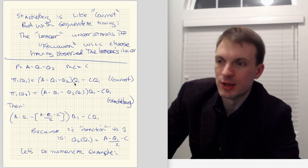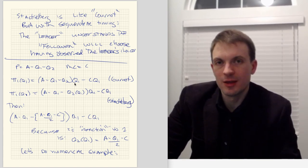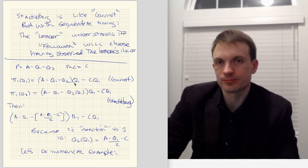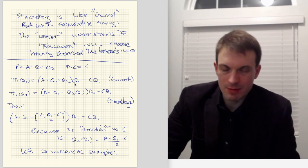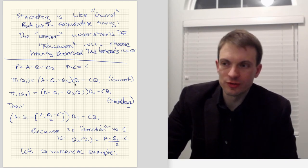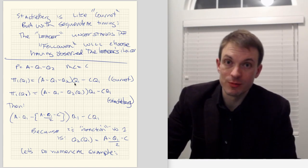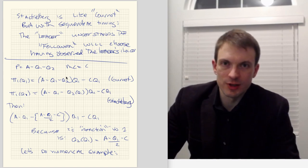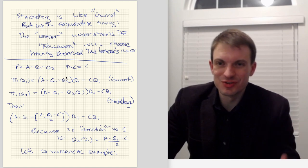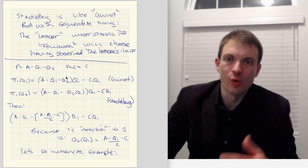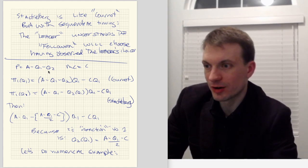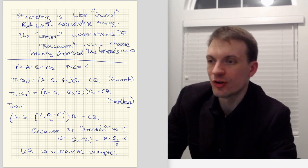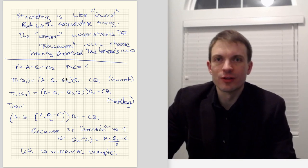Except we have a problem, because with Stackelberg we're doing sequential timing — Firm 1 moves, and Firm 2 chooses having seen what Firm 1 has done. Getting into the game theory behind the scenes, Firm 2's strategy is actually going to be a function — their best response function — and we're going to have to put that into our profit statement. Firm 2 is not choosing their quantity arbitrarily; they're choosing knowing what Firm 1 has chosen and how much the market will bear. So what Firm 1 does is going to strongly influence how Firm 2 reacts.